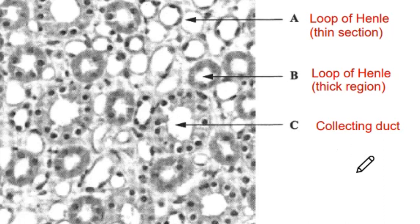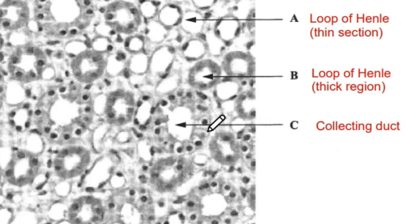Another way to identify the collecting duct is that the cells bulge towards the centre, which is the lumen — where the filtrate, usually urine, passes through. The cells bulge because the collecting duct is usually filled with aquaporins, which are water-filled channels that facilitate osmosis. The collecting duct transports urine to the ureters but is also used to reabsorb water back into the bloodstream — that's why the cells bulge towards the lumen.